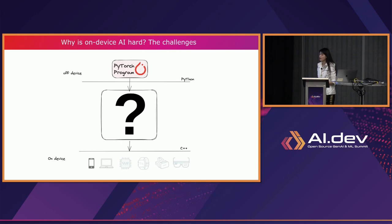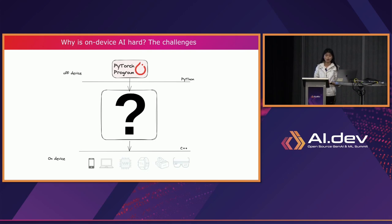Here's the key question: from a PyTorch program where everything happens in Python, what are the options to enable running on-device — where, say, on a resource-limited device, only C++ is available? What are some options here?